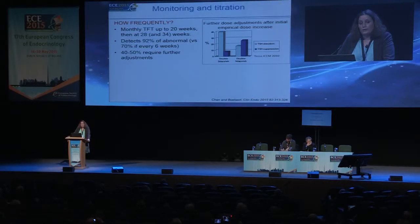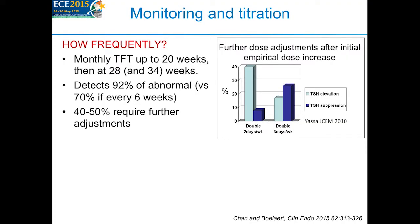We recommend monthly thyroid function testing up to 20 weeks and also four weeks after any dose change. If you check only every six weeks, you detect only 70% of abnormal results, whereas by doing it four-weekly you detect about 92% of abnormal results. About 40–50% of women, despite this empirical dose increase, need a further adjustment.